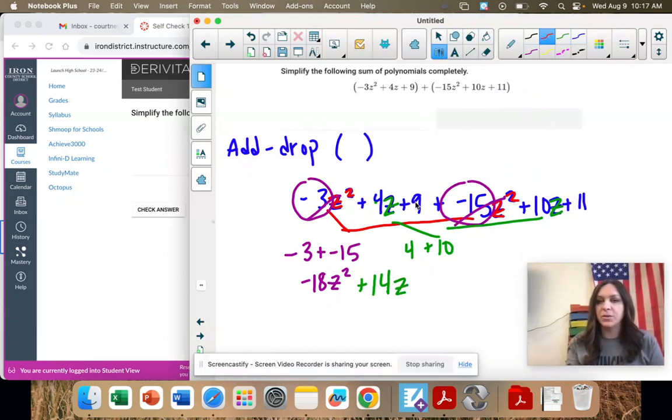And our last one is the constant 9 and 11. There's no variable, just the number. We just add them. Plus 9 plus 11. We get plus 20.